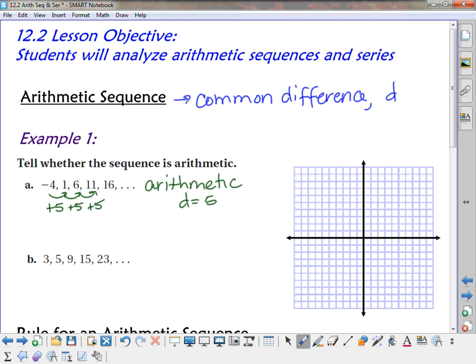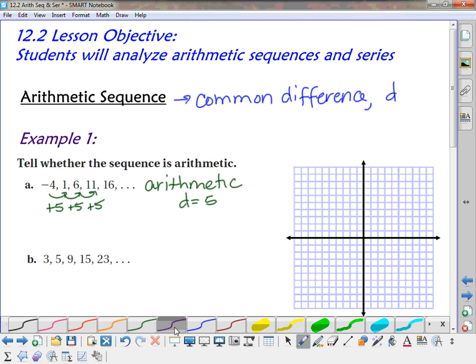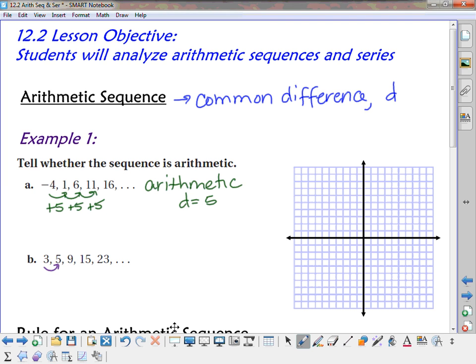Let's take a look at B. What's happening on B? How much did I go up from 3 to 5? Up 2. What about 5 to 9? 4. 9 to 15? 6. 8. Okay, is that a common difference? No. It does have a pattern, but it's not arithmetic. There's no common difference.